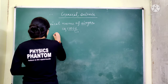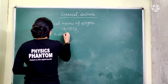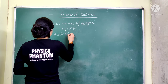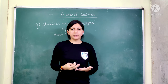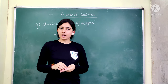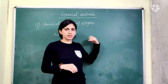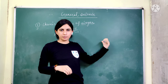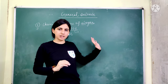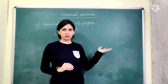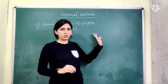Vinegar's chemical name is Acetic Acid. Acetic Acid belongs to the Carboxylic Acid group. It is called COOH — this is the functional group. There are six types of functional groups but mainly we deal with COOH. This belongs to one of them.